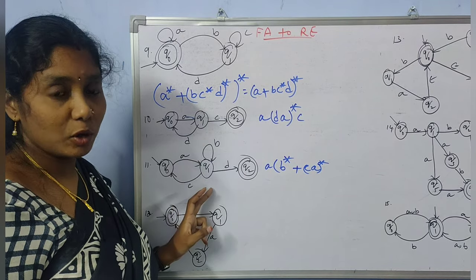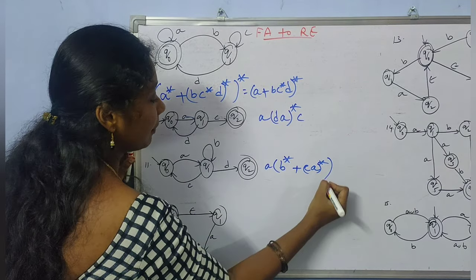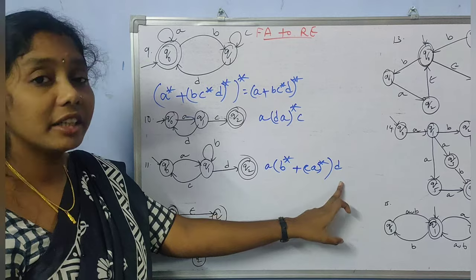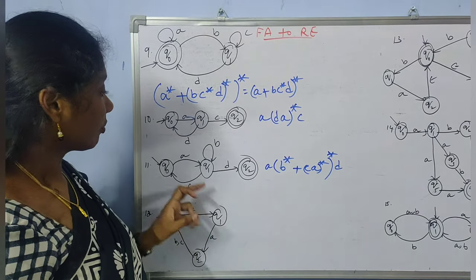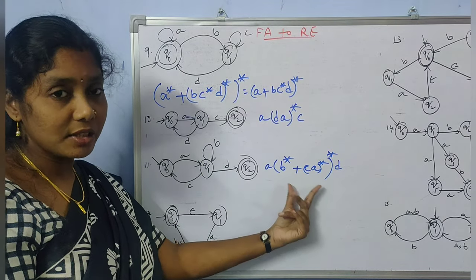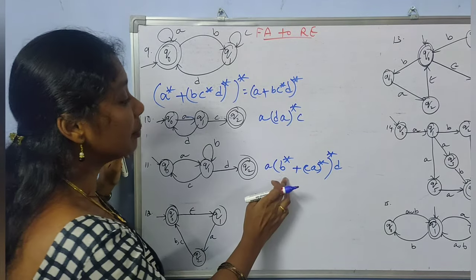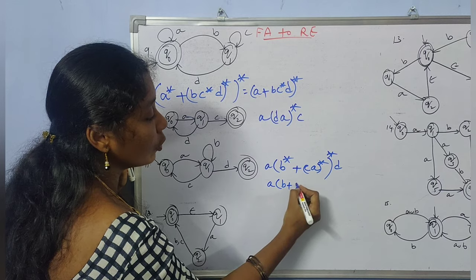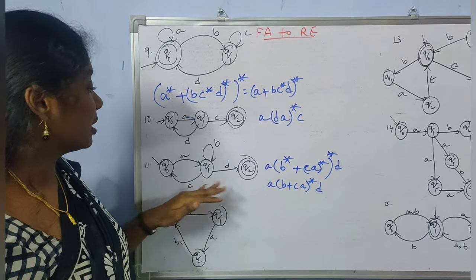To reach the final state Q2 you must take 'd'. So the loop choices — 'b' and 'ca' — can be repeated any number of times before taking 'd'. This is in the form of (P* + Q*)* which simplifies to (P + Q)*. Here P is 'b' and Q is 'ca', so the equivalent regular expression is a(b + ca)*d.